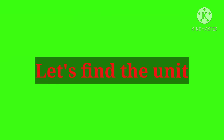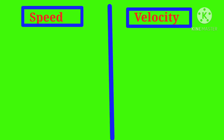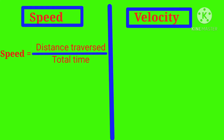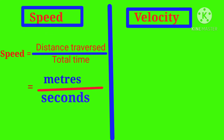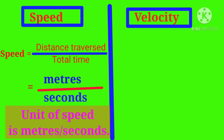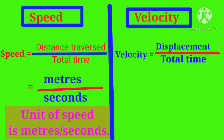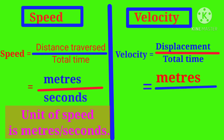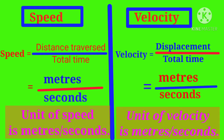Let's find the unit of speed first. The formula for calculating speed is: Speed = Distance traversed / Total time. Distance is measured in meters and time is measured in seconds; therefore, the unit of speed is meters per second. Now let's find the unit for velocity. The formula for calculating velocity is: Velocity = Displacement / Total time. Displacement is measured in meters and time is measured in seconds; therefore, the unit of velocity is also meters per second. From this we can conclude that both speed and velocity have the same unit: meters per second.